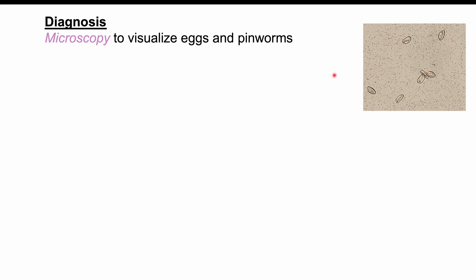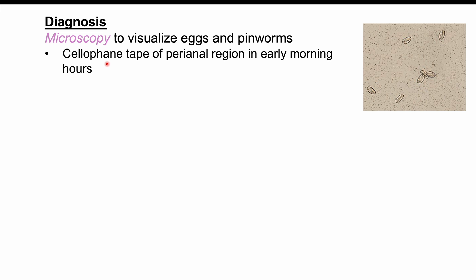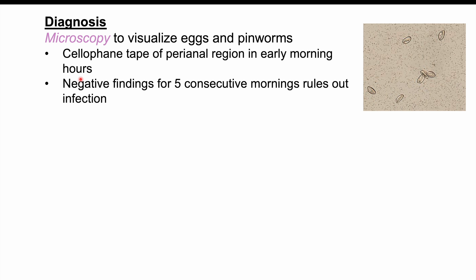Diagnosis of pinworm infection is by microscopy — using a glass slide to visualize the eggs and pinworms. Cellophane tape is applied over the perianal region in the early morning hours when there are the most eggs, then applied to a glass slide and examined under a microscope. Visualizing eggs or pinworms is enough to make the diagnosis. If negative, testing continues for five consecutive mornings; five consecutive negative findings rules out infection.